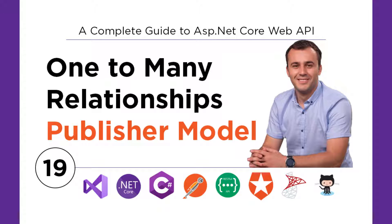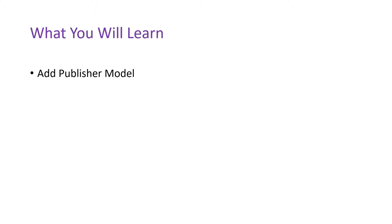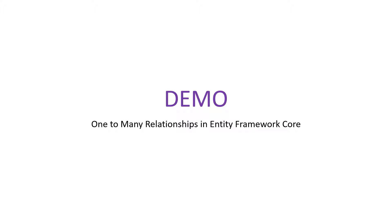In this part, you'll learn how to add the one-to-many relationship using Entity Framework Core. For that, you'll add the Publisher model because, as we have said, the publisher can publish multiple books but a book can be published by a single publisher. You'll create a Publisher model and define the relationship between the Publisher model and the Book model, then add a migration and update the database. Let us go to Visual Studio and see it in action.